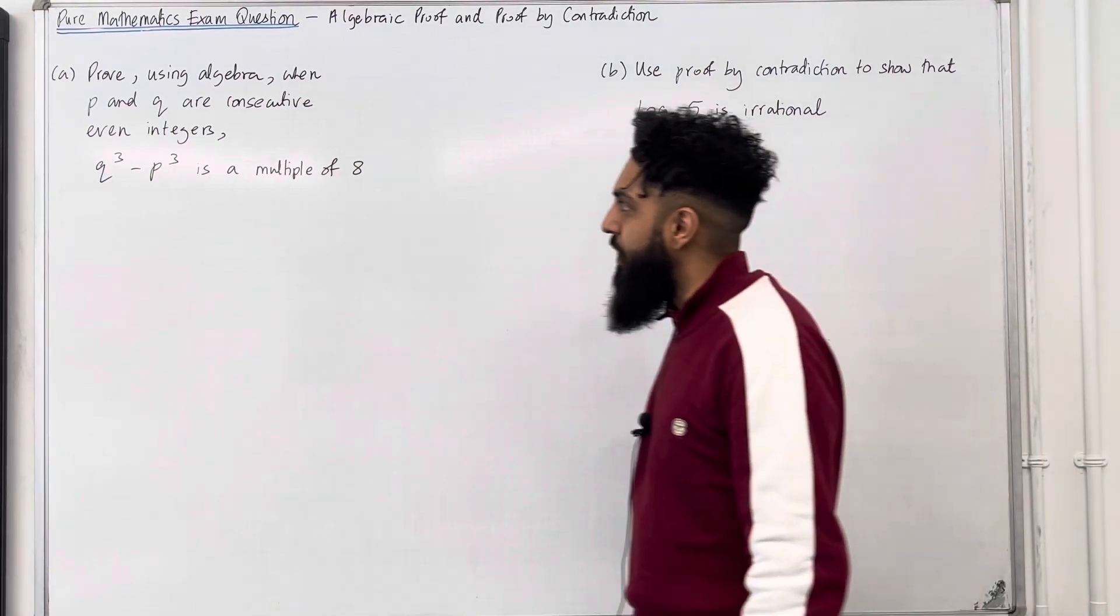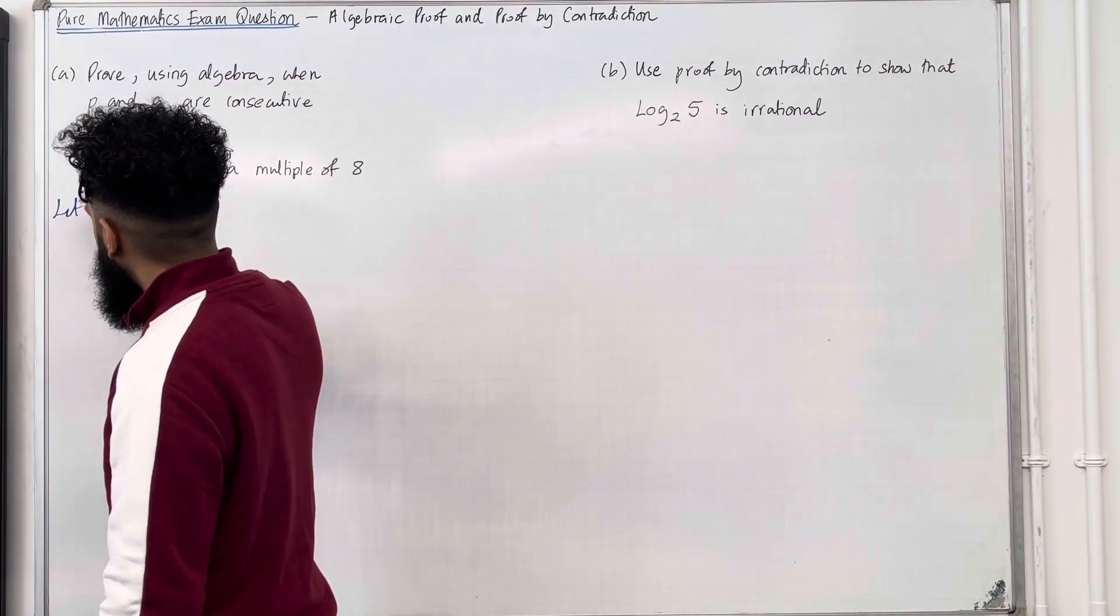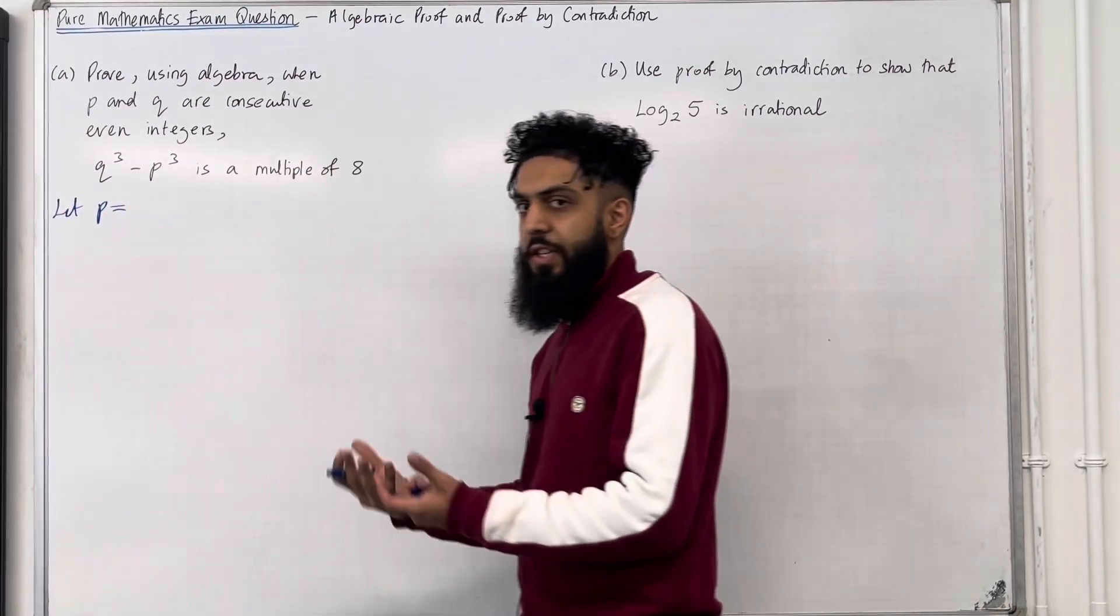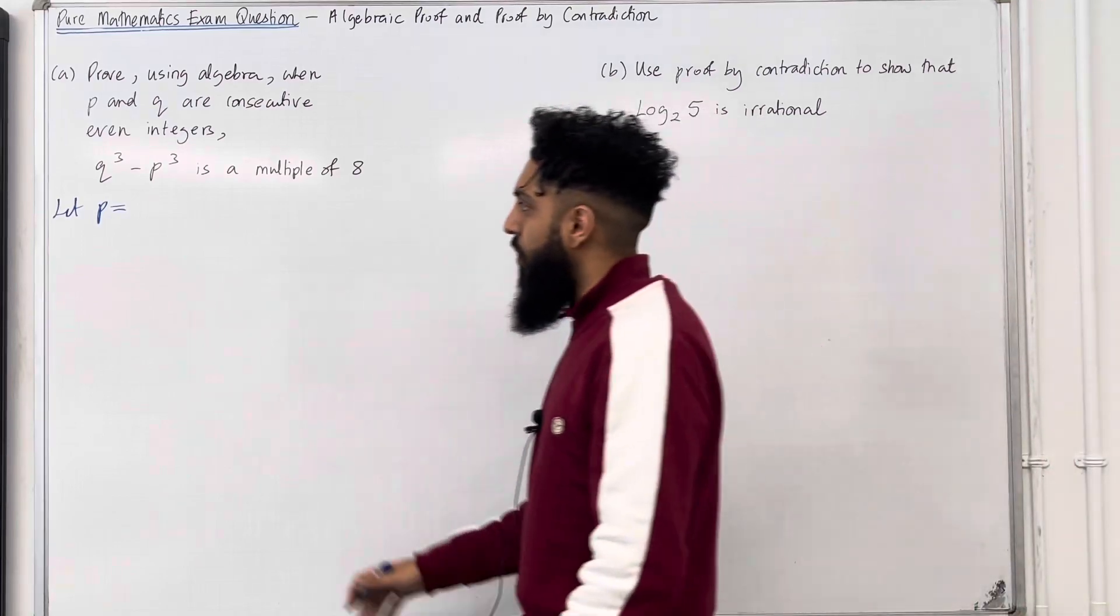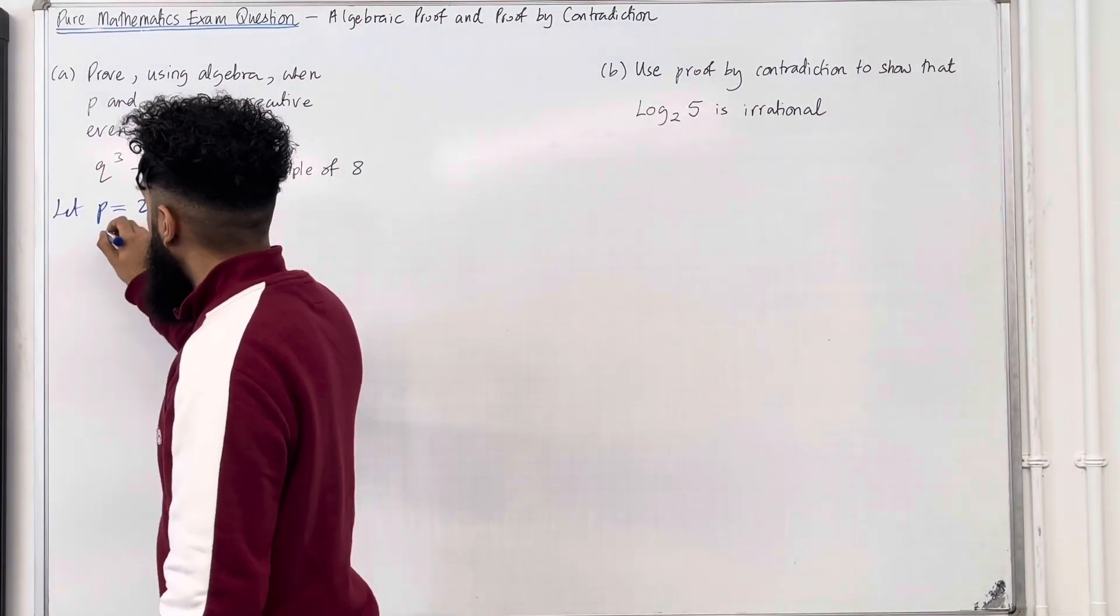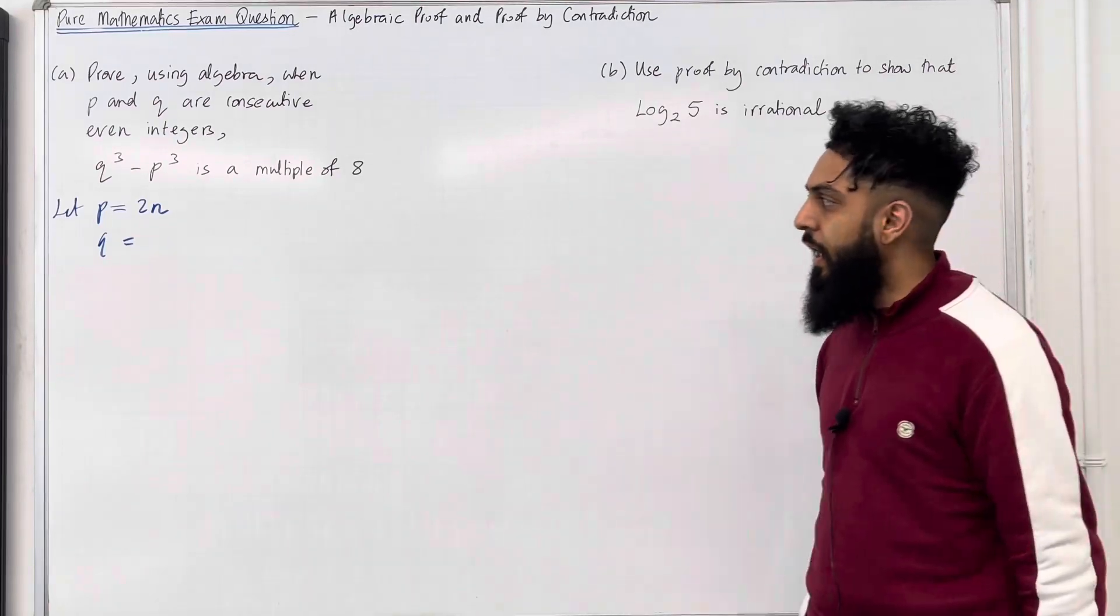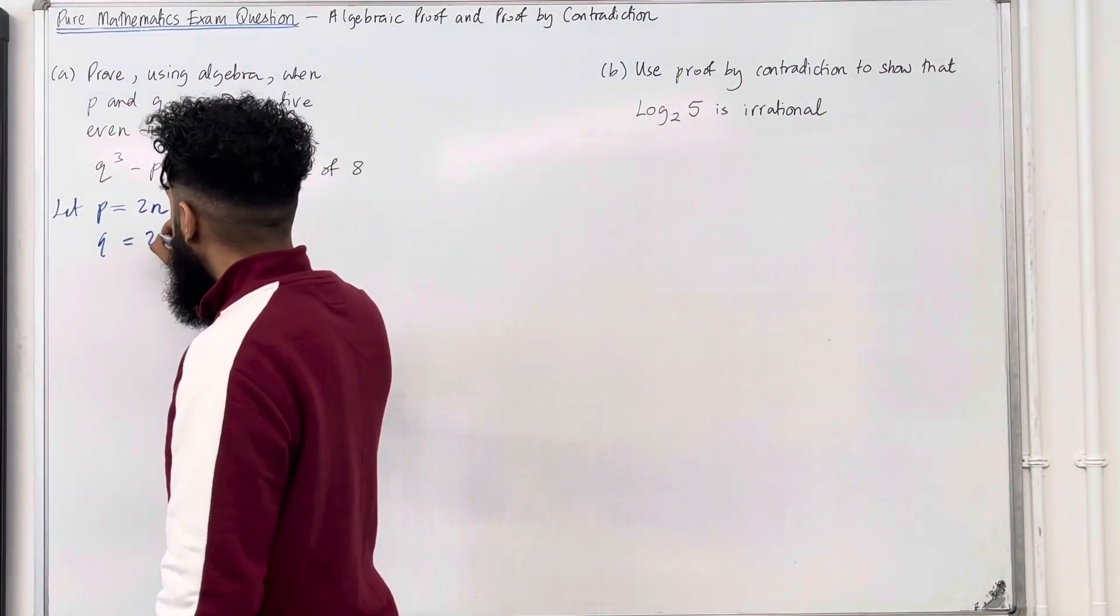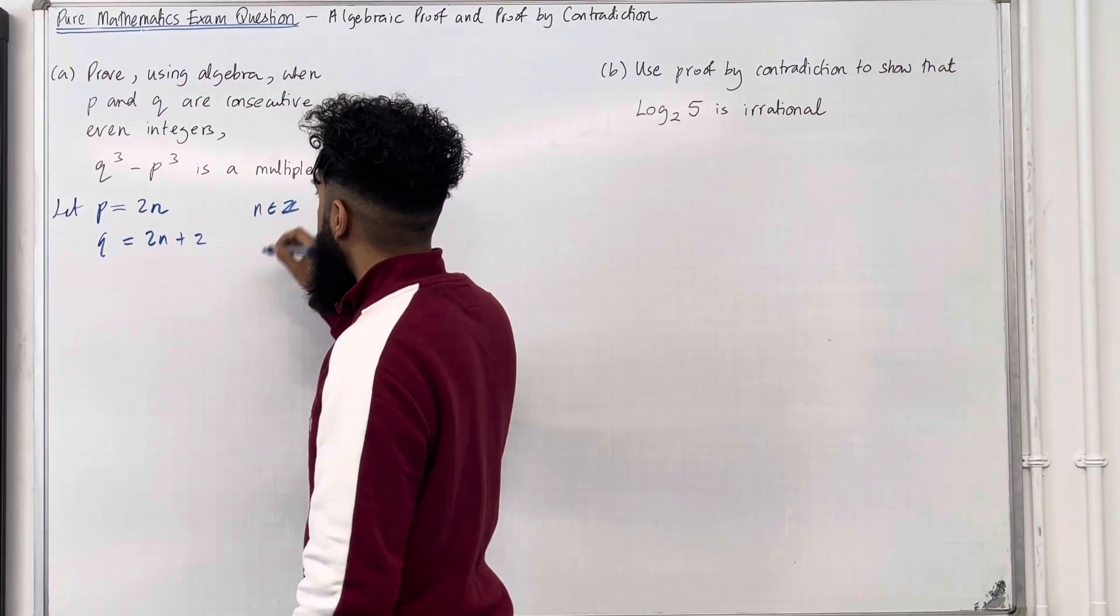Let's have a look at the solution to part A. So we're going to let P equal an even integer. Now an even integer is of the form 2N, so P equals 2N. Now Q is the next even integer because P and Q are consecutive even integers. So Q would be 2N plus 2, where N is an integer.